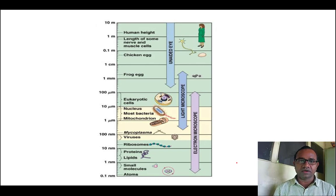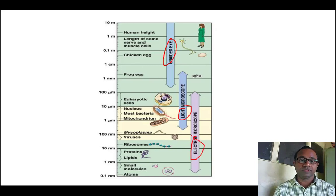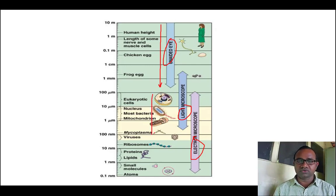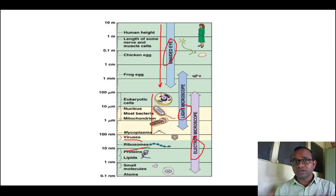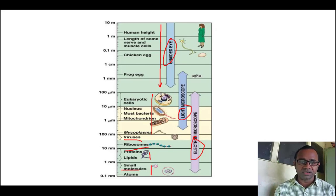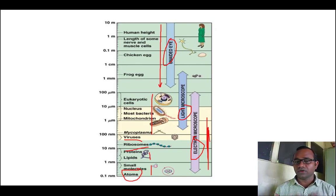We can check the various sizes of objects observable by the naked eye, the light microscope, and the electron microscope. Up to a certain range we can see with our naked eyes. For much smaller things we need the light microscope — down to mycoplasma. But to see viruses, the internal structure of cells, proteins, lipids, small molecules, and even atoms, we need the electron microscope.